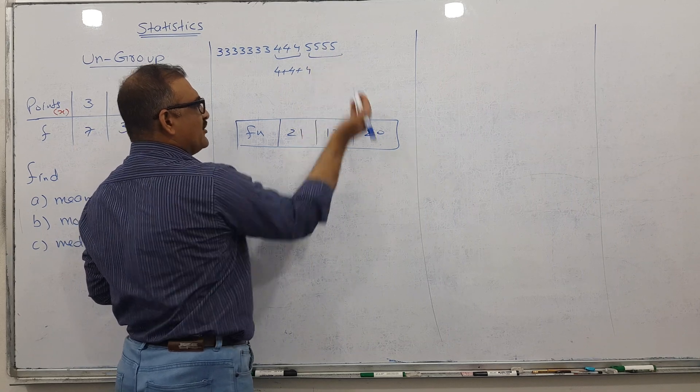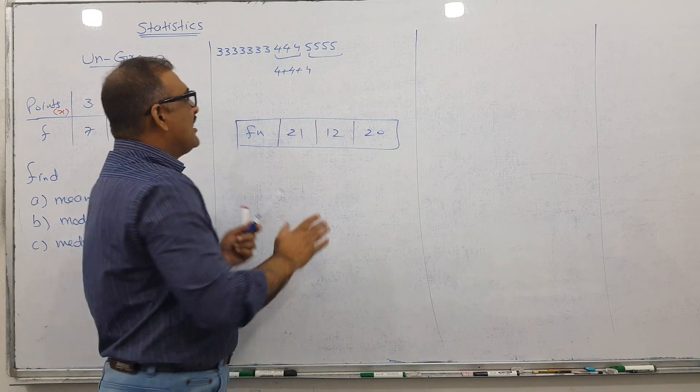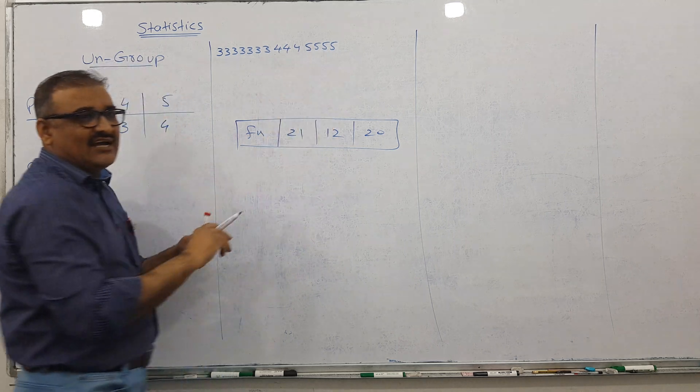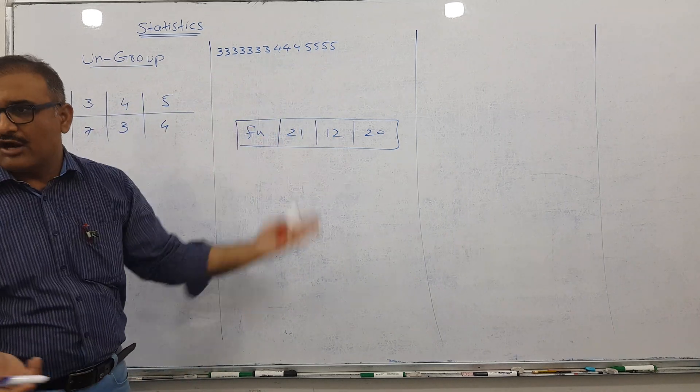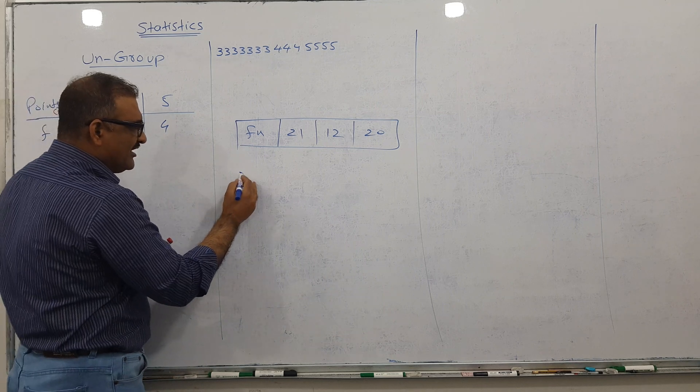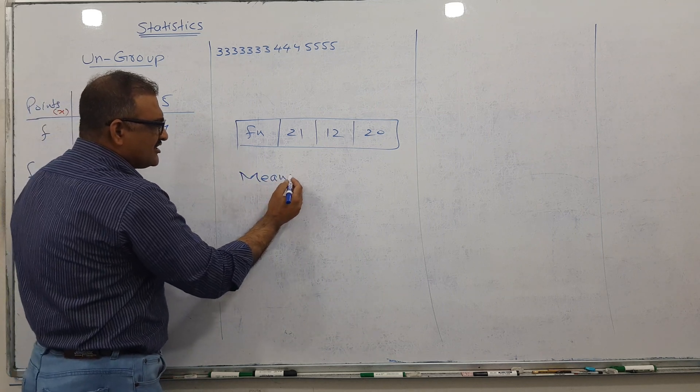So I'm doing the same job as adding raw data, just in table form. What is the formula for mean? The formula is Sigma FX divided by Sigma F.